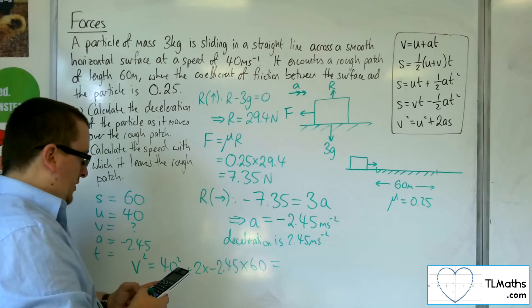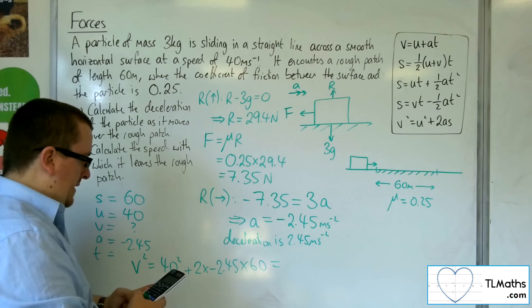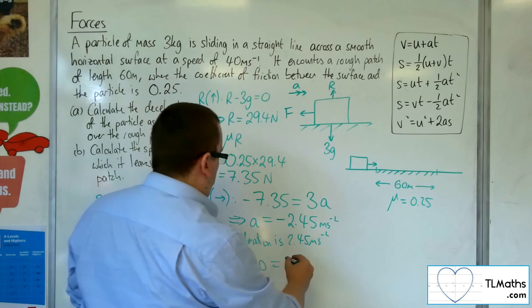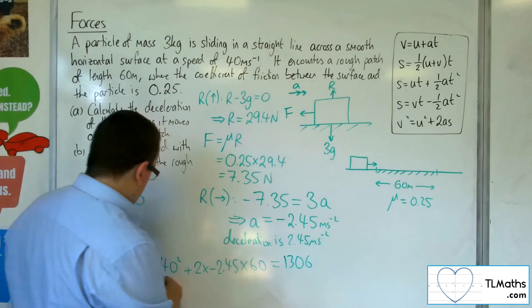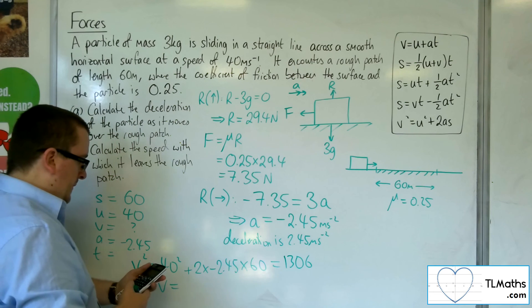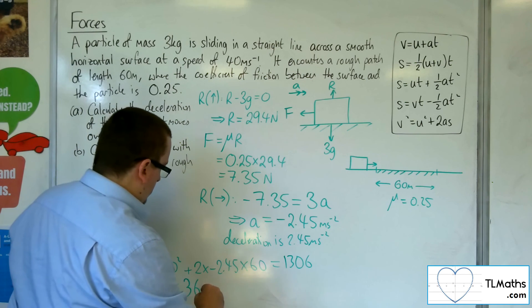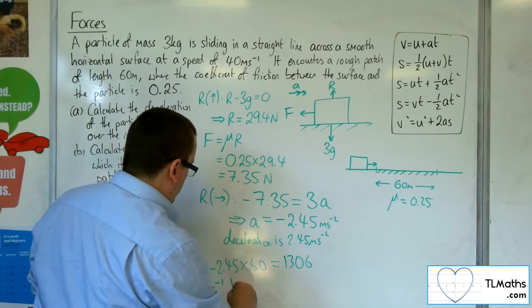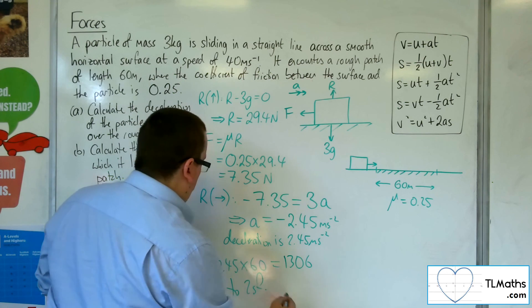So 40 squared, take away 2 times 2.45 times 60. So that's 1306. So V is the square root of that, which is 36 metres per second to 2 sig fig.